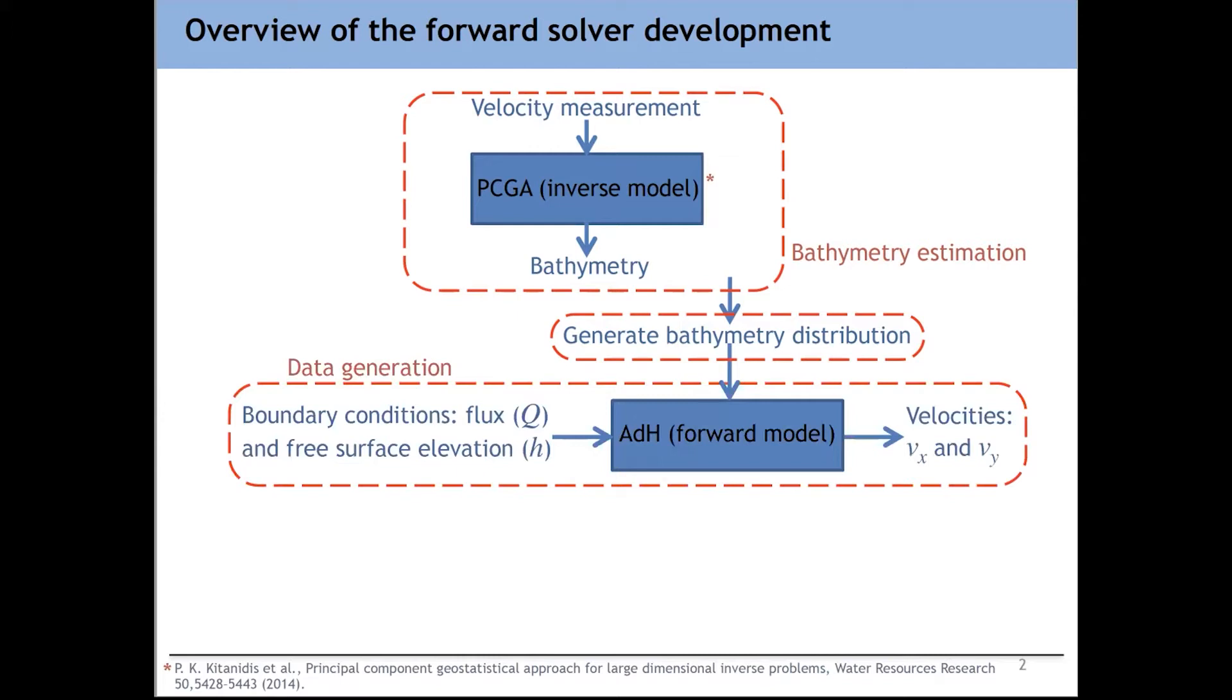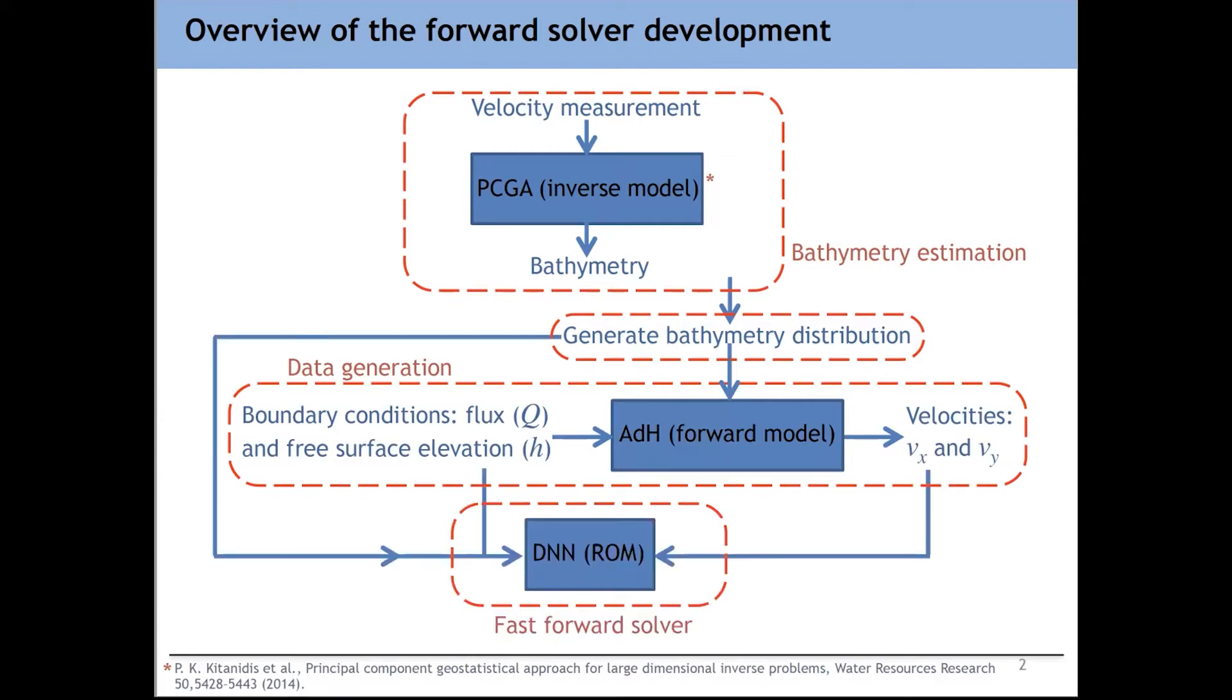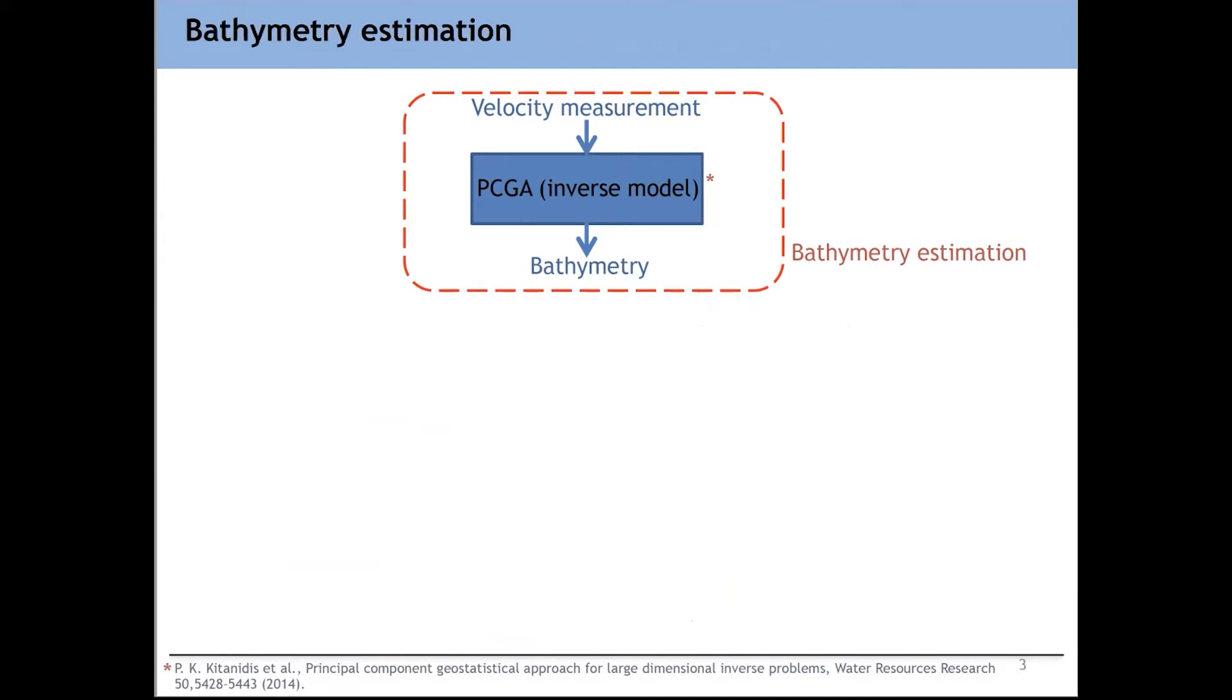And then after that, while we have information of the bathymetry profiles, we generate boundary conditions here, the flux and the free surface elevation of the river, and then use some sort of numerical solver. Here we use ADH. Again, I'm going to discuss what this forward solver is to predict, to calculate the flow velocities. And then eventually we're going to use all this information as our data to our deep neural network or our ROMs, reduced order models, which is pretty much the main core of this whole process, which is the fast forward solver. And a little bit detail of these stages, one by one, what's going on in each of these stages.